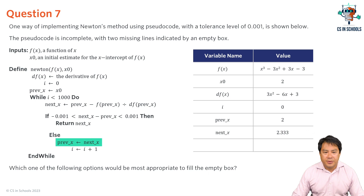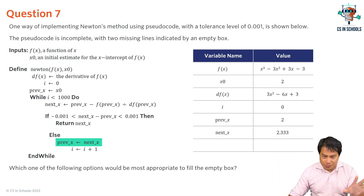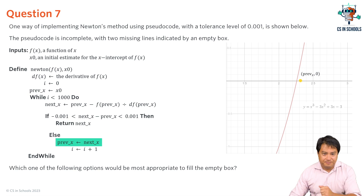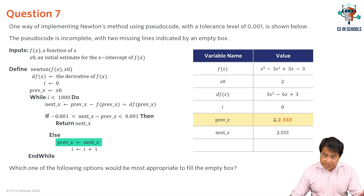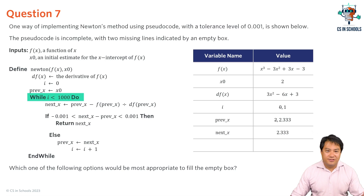Getting ready for the next iteration: we take our new estimate next_x and put it into previous_x, so the new value of x becomes the previous value for next time. The green dot (next estimate) becomes previous_x. Previous_x changes from 2 to 2.333, and i increments by 1. We reach end while, which means we go back up and re-evaluate the while condition — i < 1000 is still true, so we re-enter the loop.